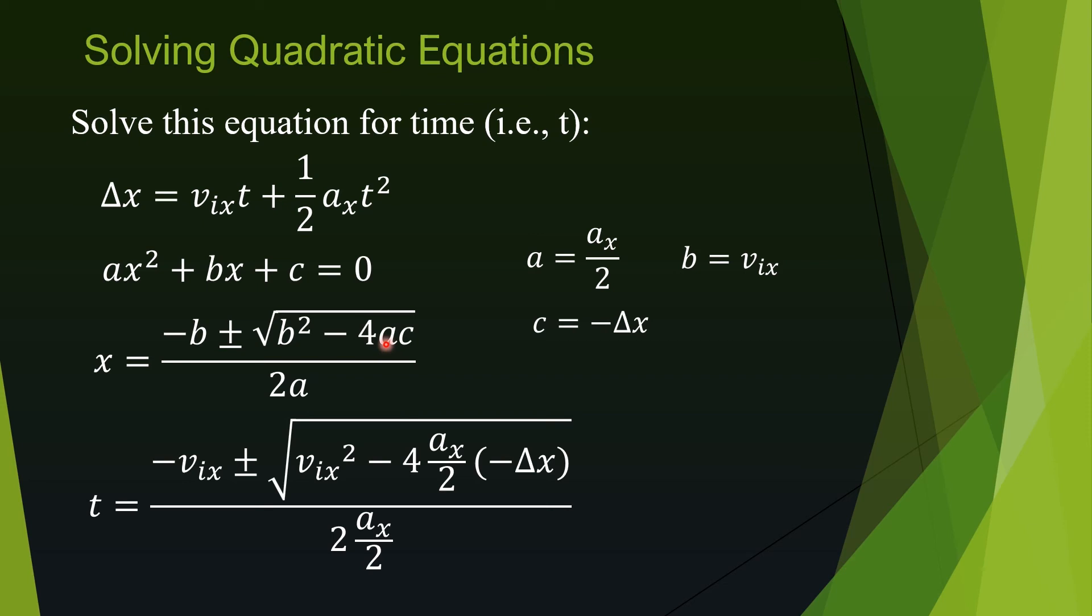Minus. I'm copying 4. And now I need a. A is aₓ over 2. And I need c, which is negative Δx. And whenever there is a negative sign, I want to be careful, so I want to put that inside the parentheses. It makes a lot of difference. There is 2a in the formula. So 2 is 2. And a, in our case, is again aₓ over 2. So that's what I'm copying.